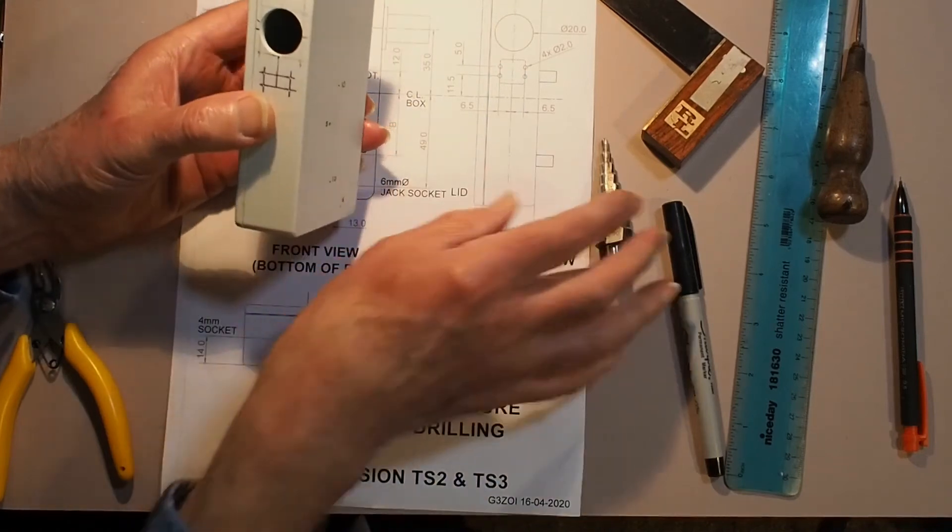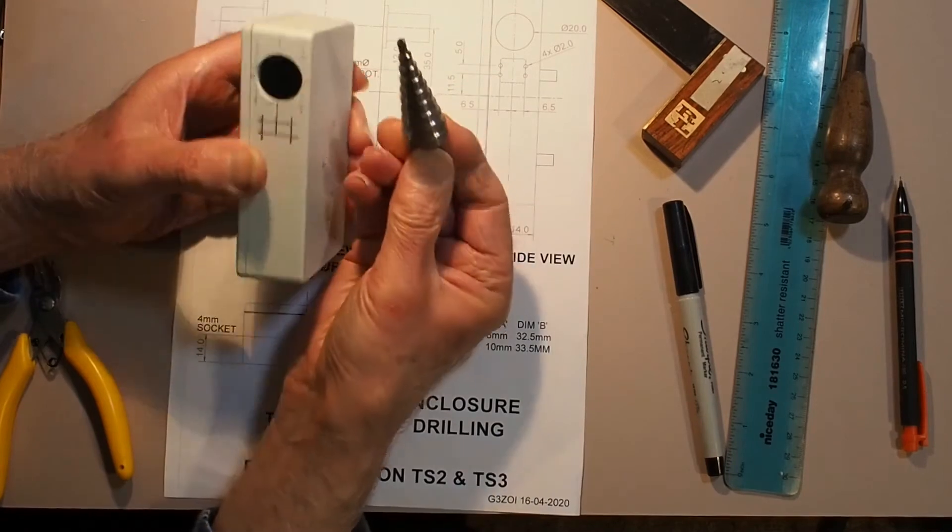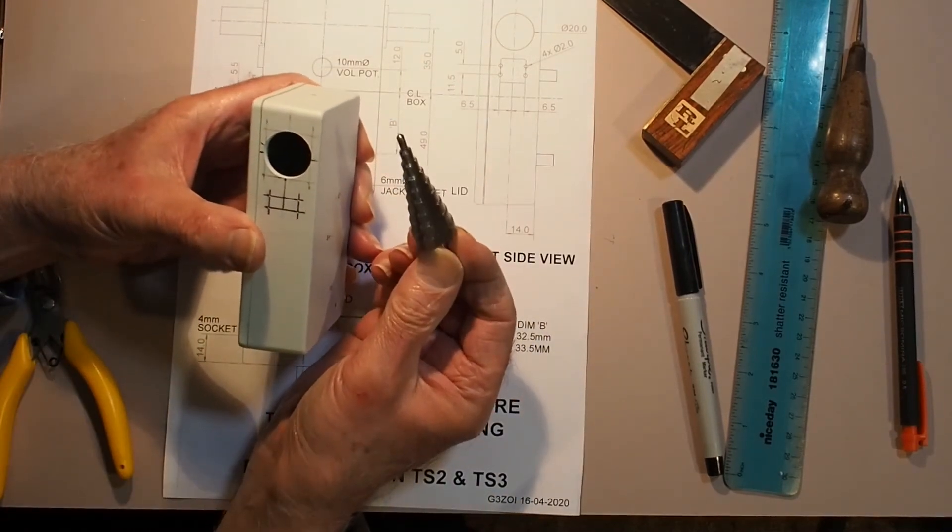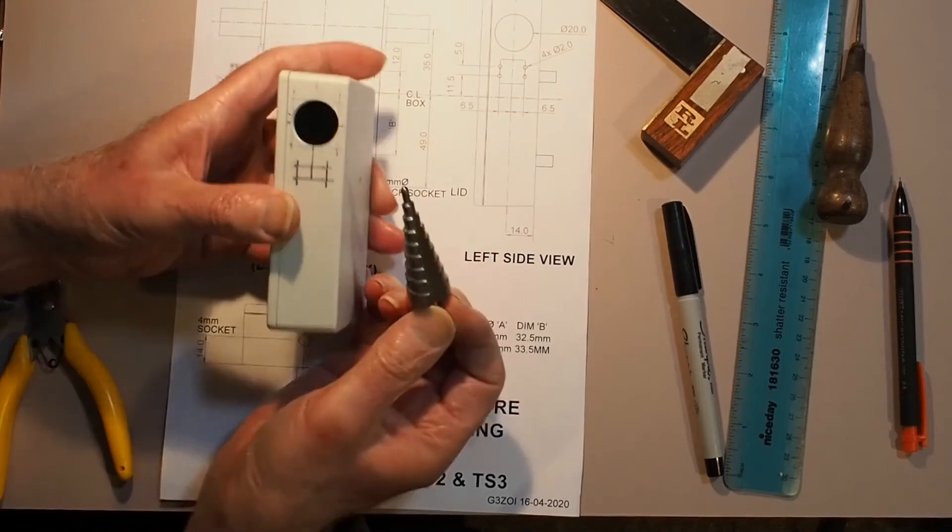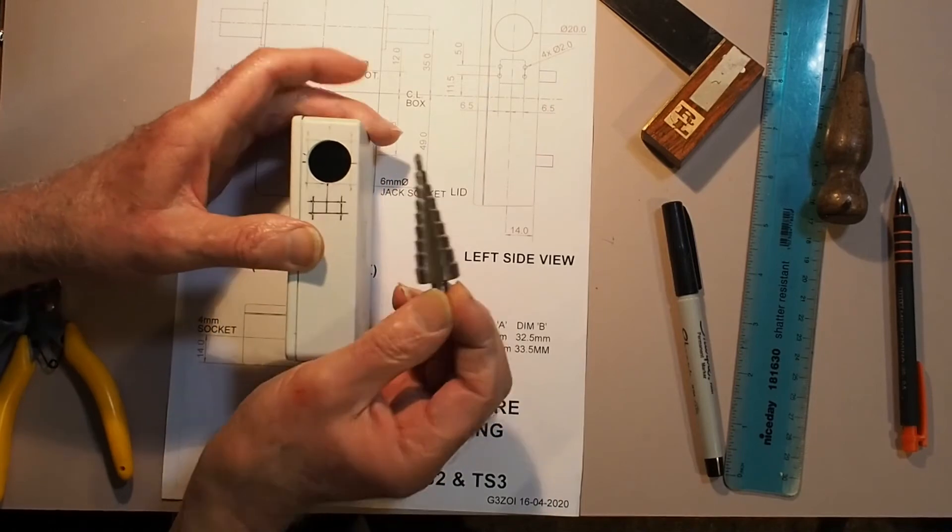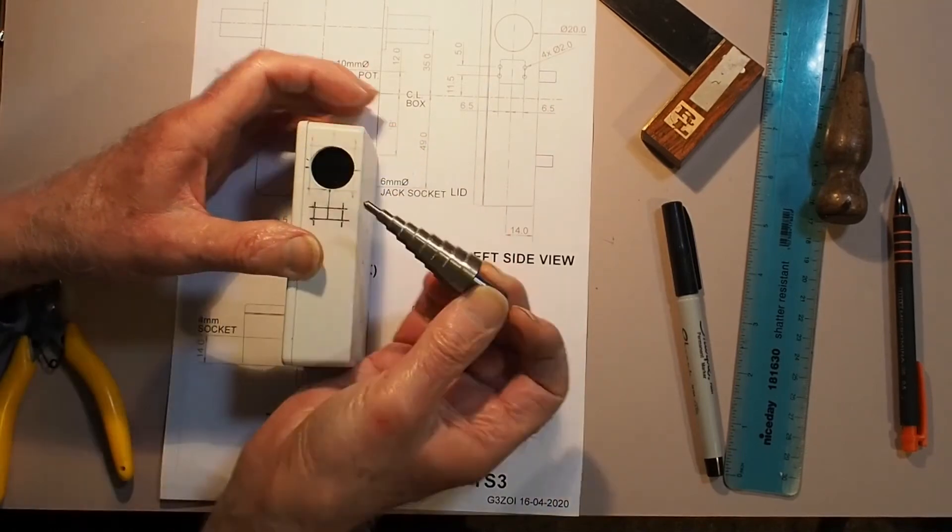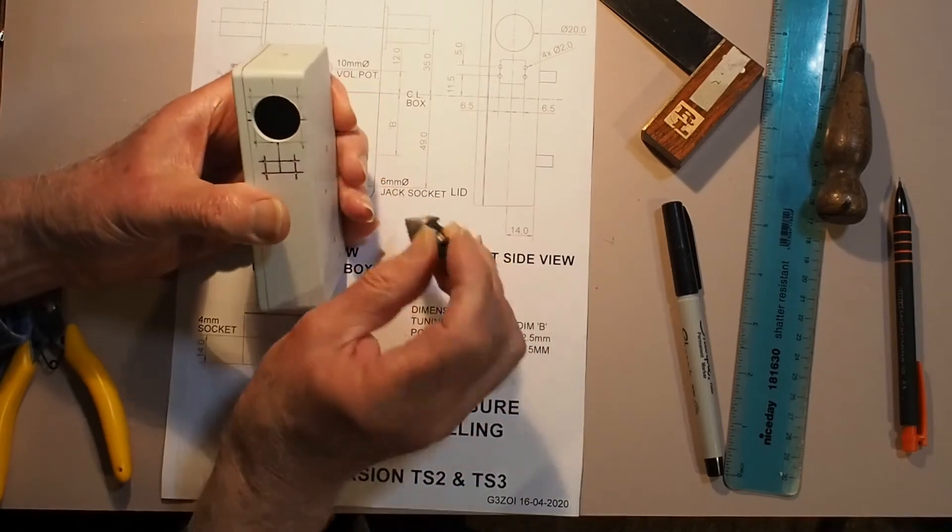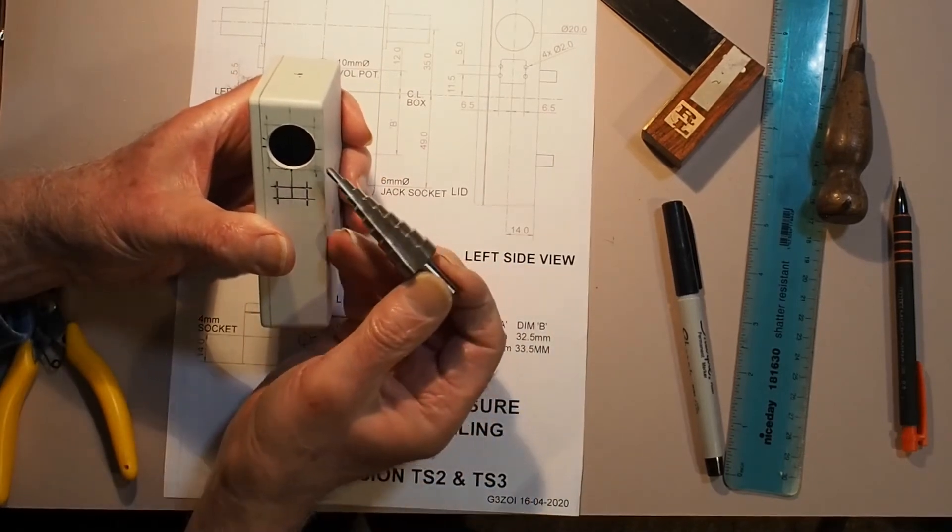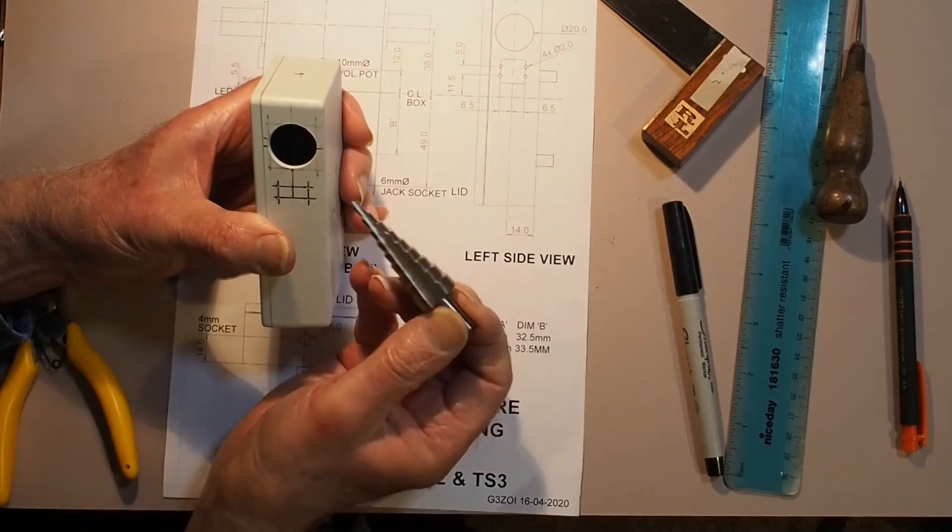As I said before, I use a stepped drill to produce this hole. But even though I have in the past clamped the box and the drill in a drill stand, I find it's very difficult to stop the thing sort of drifting slightly off the center line of the box as you drill.